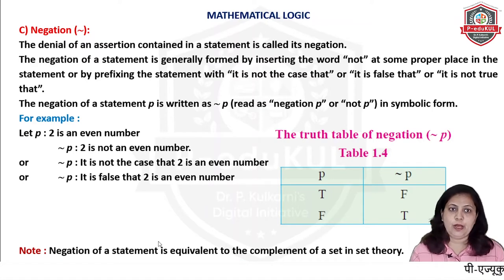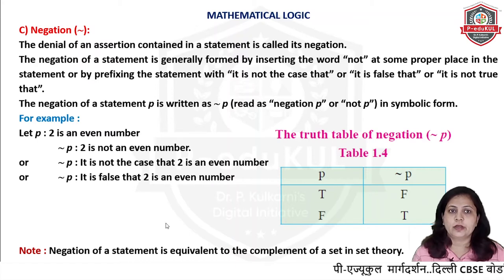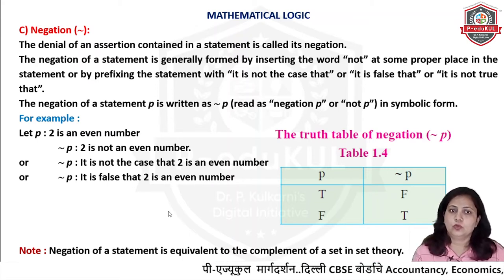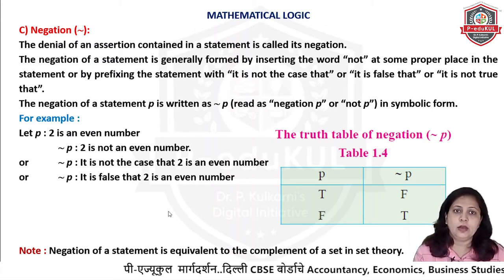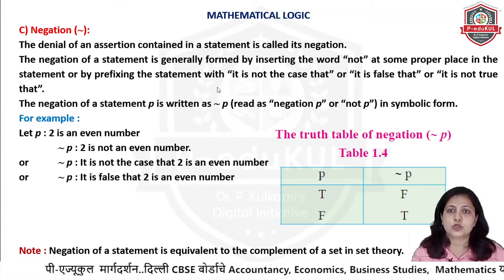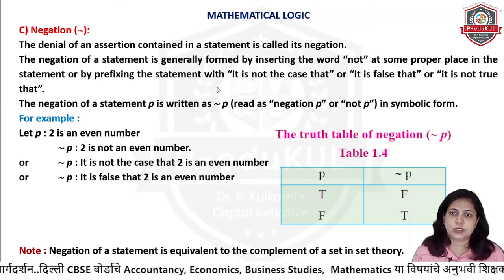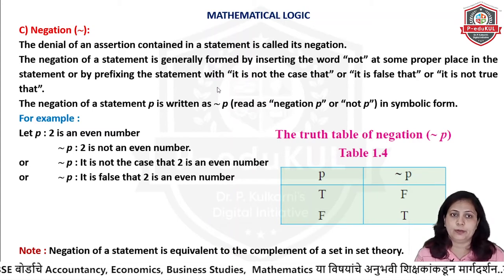Welcome to P.E.J.U.L.D.I.T.A.L.M. Mathematical logic. The next connector we will see is negation. Negation means an opposite or ulta statement. Denial of an assertion contained in a statement is called its negation. An assertive sentence means a positive statement which is showing the positive point in the statement.